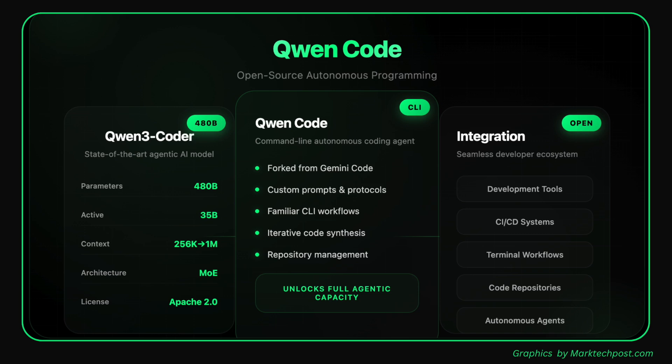It supports seamless integration with popular development tools and CI/CD systems, allowing iterative code synthesis, repository management, and tool-assisted coding directly from the terminal. Together, Qwen3 Coder 480B and QwenCode represent a transformative step in open, scalable, autonomous programming, designed to empower developers worldwide with intelligent agentic AI assistance for every coding challenge.